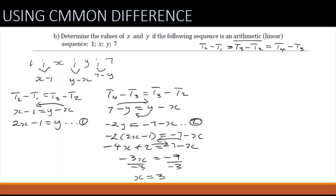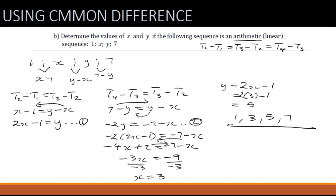With x = 3, substitute into y = 2x − 1: y = 2×3 − 1 = 5. So the sequence is 1, 3, 5, 7. The key idea: when given that a sequence is arithmetic, form equations using t2 − t1 = t3 − t2, which gives you two equations to solve simultaneously.